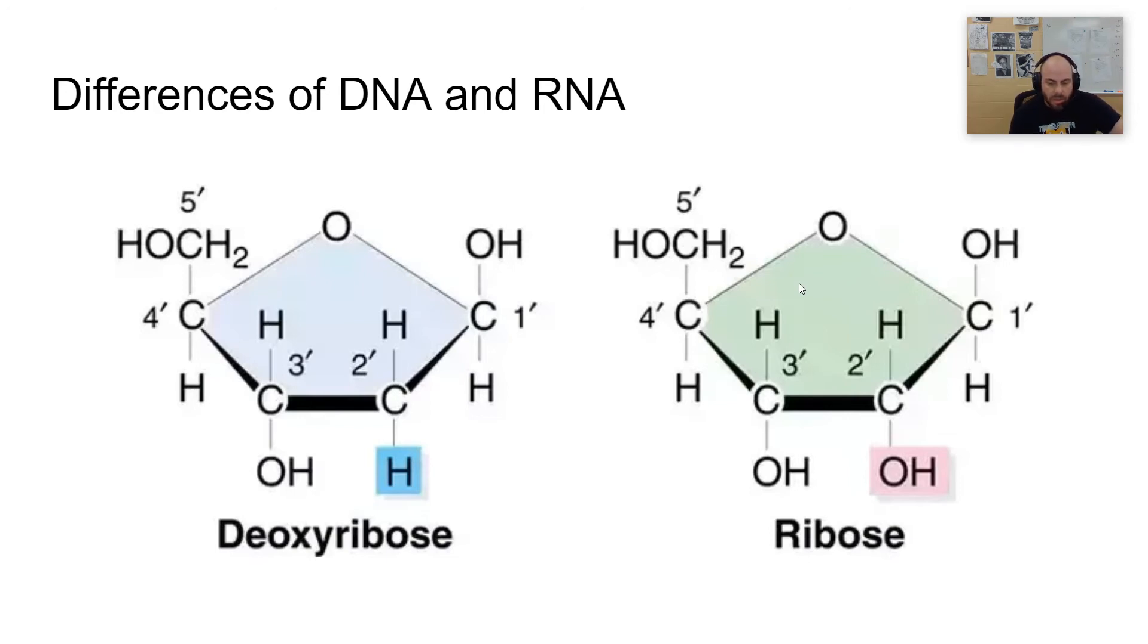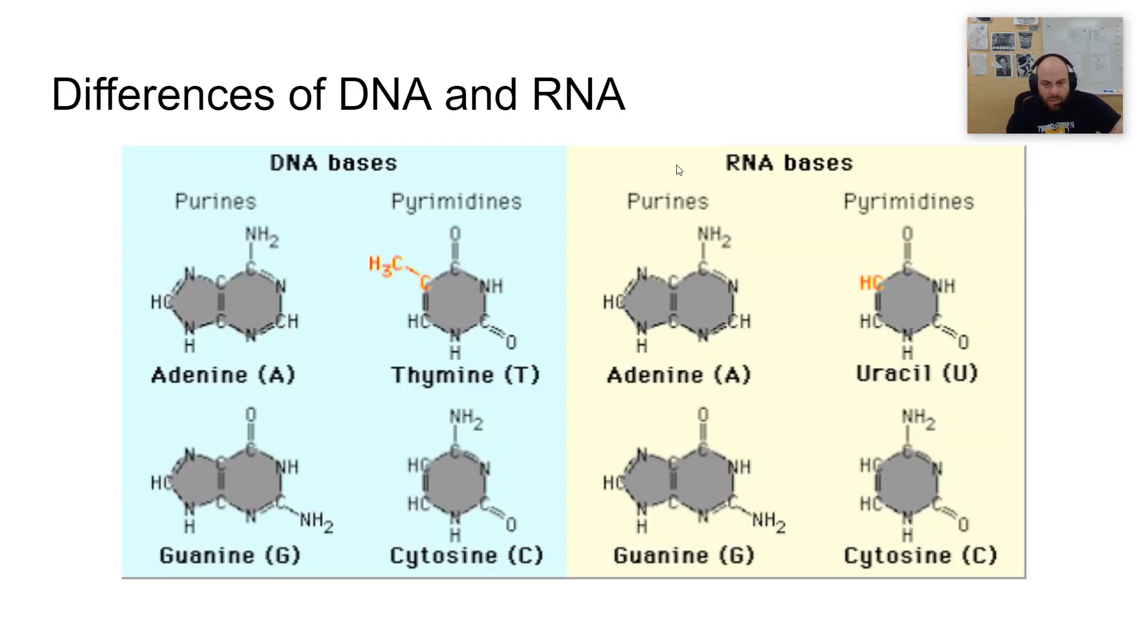Another difference between DNA and RNA is going to be the nitrogenous bases that are found. Notice the similarities first. Adenine is found in both. Guanine is found in both, and as is cytosine. But thymine here is only found in DNA, and uracil is only found in RNA. And so anywhere you would have a thymine, you're going to have a uracil in RNA instead. All these other three are the same, except for RNA is always going to have this uracil. DNA is going to have the thymine. And so A matches with T, C matches with G. Whereas in RNA, that U is going to match with the A.